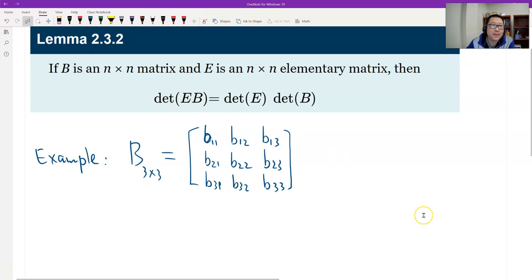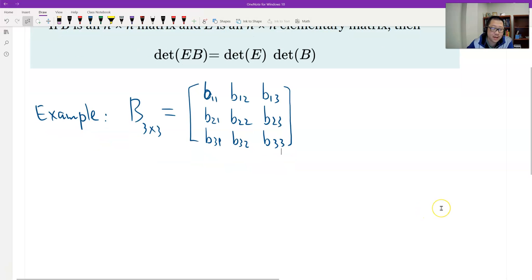Then I will classify the types of elementary matrices. Three types. Look at the first type. Type 1: Let me set up E. Of course E should be 3 by 3, right? The first type of elementary is to multiply a number. Let me simply say, multiply a number to the second row.